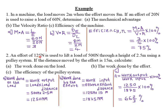Question 2: An effort of 125 newtons is used to lift a load of 500 newtons through a height of 2.5 meters using a pulley system. The distance moved by the effort is 15 meters. Part A — Work done on the load equals load times load distance: 500 newtons × 2.5 meters equals 1,250 newton-meters.